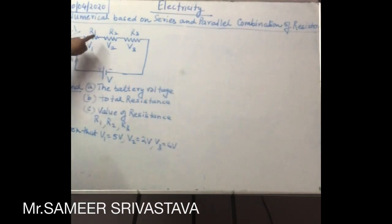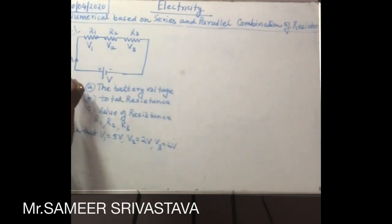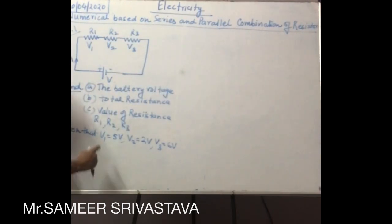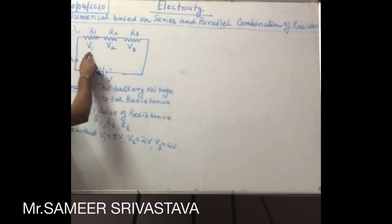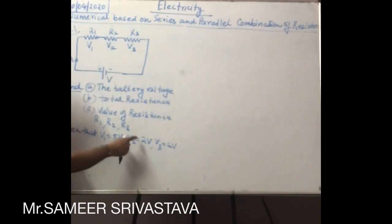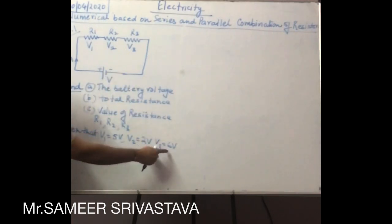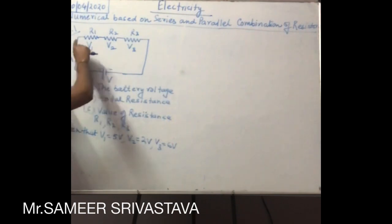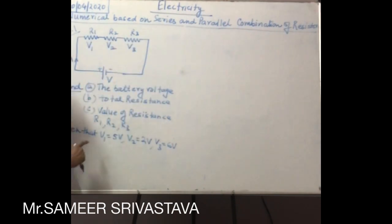I am taking one problem here. The given data are: the current value is 4 ampere flowing in this circuit. The potential across resistance R1, R2, and R3 are given as 5 volt across R1, 2 volt across R2, and 6 volt across R3. From this circuit it is clear that these three resistances are connected in series.